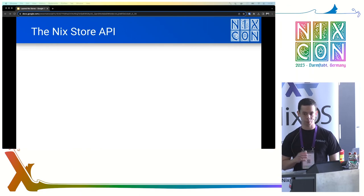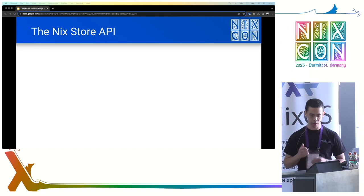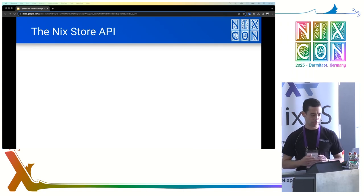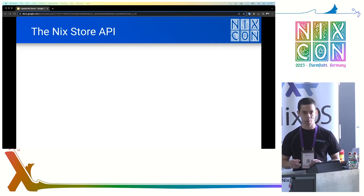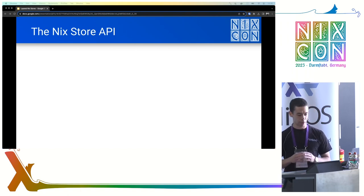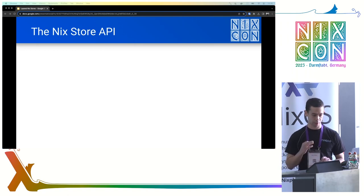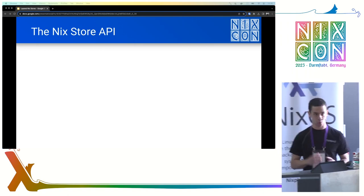Every valid path in the Nix store also has metadata associated with it, and this metadata is stuff like hashes, dependencies, or which derivation produced the path as an output. To ensure that the necessary metadata and invariants are maintained, all Nix commands, like nix build, access and manipulate the Nix store via the Nix store API.